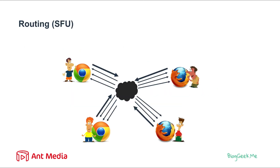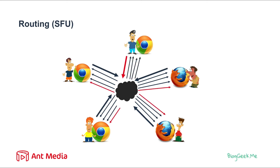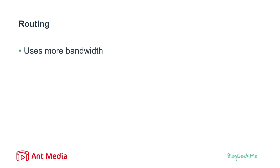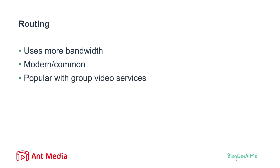Then there's routing. With routing we use an SFU — Selective Forwarding Unit. In this architecture each participant sends his data towards the SFU in the cloud and receives routed media from all the other participants through that SFU. If another participant joins, he sends his data to the SFU, which routes that data selectively to all other participants, while he receives all media from all other participants simultaneously. Routing uses more bandwidth than the other alternatives because there are many more media streams. It is a modern choice and very common with group video services — almost all of them use the SFU routing model.